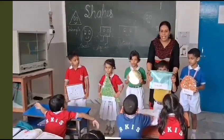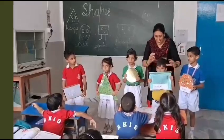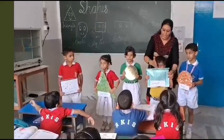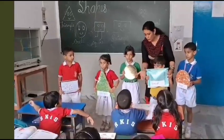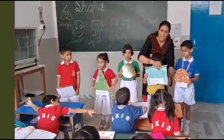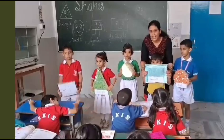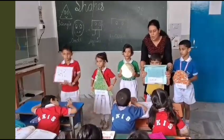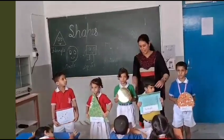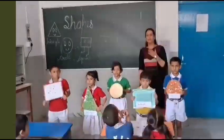And rectangle. Rectangle has four sides. One, two, three, and four. How many sides in the rectangle? Four. Very good. And four corners. One, two, three, and four.